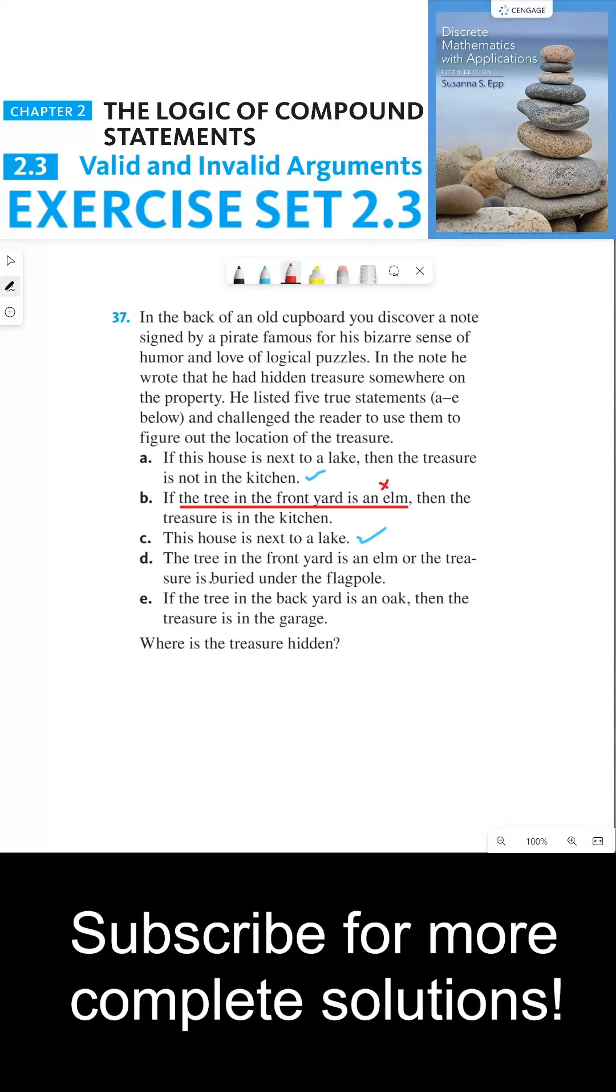Now, if you look at part D, it says the tree in the front yard is an elm, which we already know is false based on part B, or the treasure is buried under the flagpole. Well, this second part has to be true because we know the first part is false. And the or statement says that at least one of these statements has to be true. So this means that the treasure is buried under the flagpole and we have found the treasure.